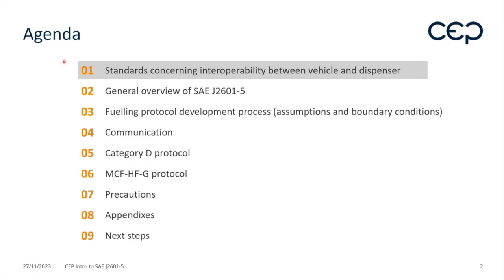First I will talk about the current standards — not only the SAE J2601-5 but all current standards concerning interoperability between vehicle and dispenser. Then I will move to the overview of the dash-5 and a very important chapter: the assumptions and boundary conditions, because they are different from the light duty vehicle — the tanks are bigger. That's an important remark.